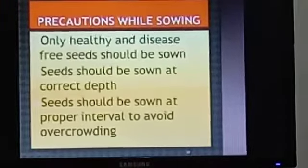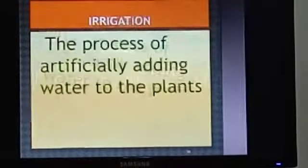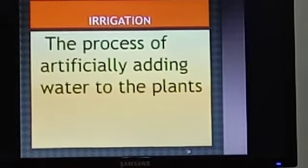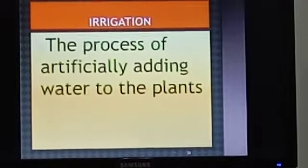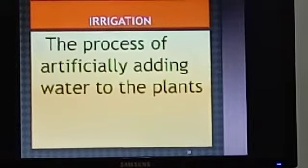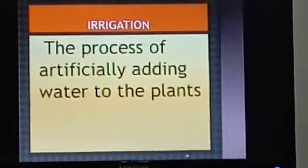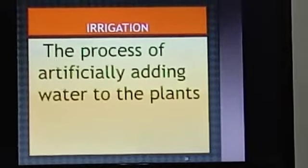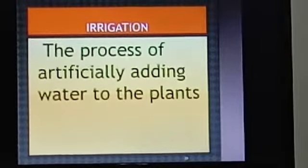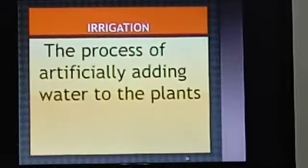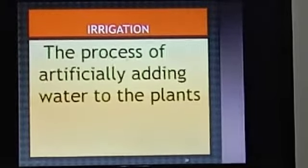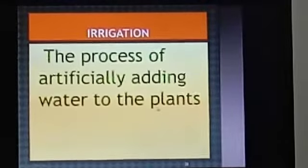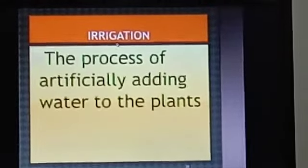The next step in farming is irrigation. We know that water is very essential for crops, and rainwater may not be sufficient. So the crops have to be watered artificially. The process of artificially adding water to the plants is called irrigation.